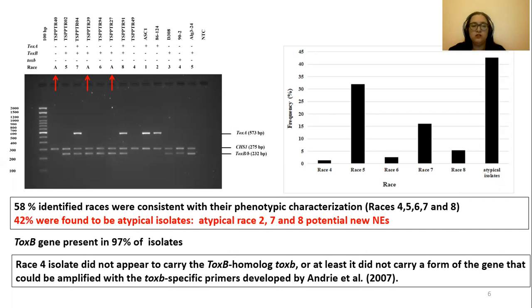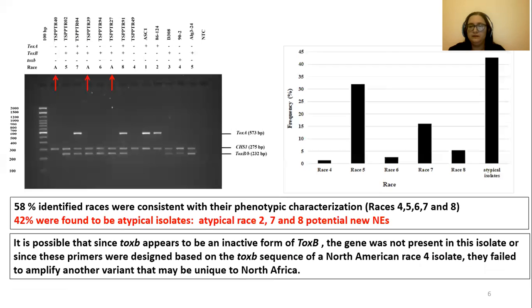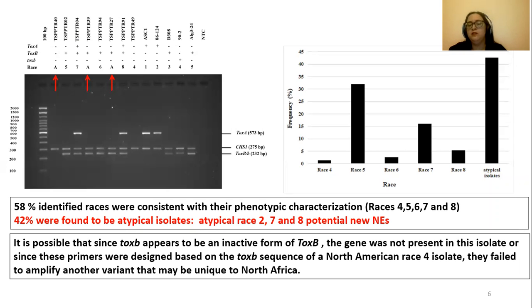The ToxB gene was present in 97% of the Tunisian PTR isolates. Interestingly, the race 4 isolate originating from Tunisia did not appear to carry the ToxB homolog, or at least it did not carry a form of the gene that could be amplified with the ToxB-specific primers used in this study and developed by Andrie. It is possible that since the ToxB homolog appears to be an inactive form of ToxB, the gene was not present in this isolate, or since these primers were designed based on the ToxB sequence of the North American race 4 isolate, they failed to amplify another variant that may actually be unique to North Africa.